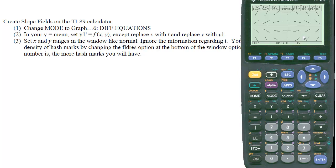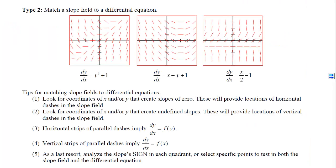On the AP exam, slope fields will always be drawn by hand. The second type of problem is matching a slope field to the differential equation that created it. With Type 1, you generate the slope field yourself. With Type 2, you're given slope fields and a selection of differential equations and must match them. The first tip is to look for coordinates of x or y that create zeros — values that make the slope equal to 0.